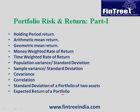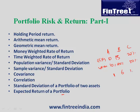Next is expected return on a portfolio, which is simply a weighted average. For example, assets A, B, and C have expected returns of 10%, 15%, and 20%, with weights of 10%, 40%, and 50% respectively. Weighted returns: 10×10% = 1, 15×40% = 6, 20×50% = 10. Total expected portfolio return = 17%.